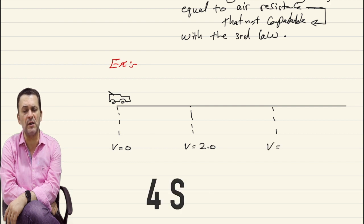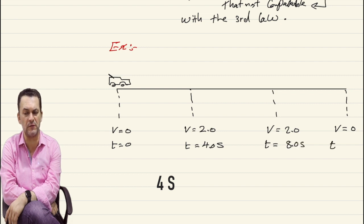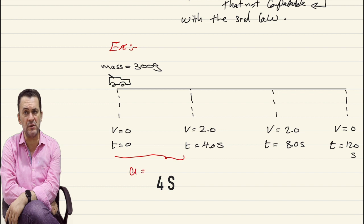Considering the mass of the car is 300 grams, we find the acceleration for the first stage using the equation: acceleration equals change in velocity divided by time. So for the first stage, acceleration equals (2 minus 0) divided by 4, which equals 0.5 m/s². We can also find the force: force equals mass times acceleration, so 0.3 kg times 0.5 gives us 0.15 Newton.